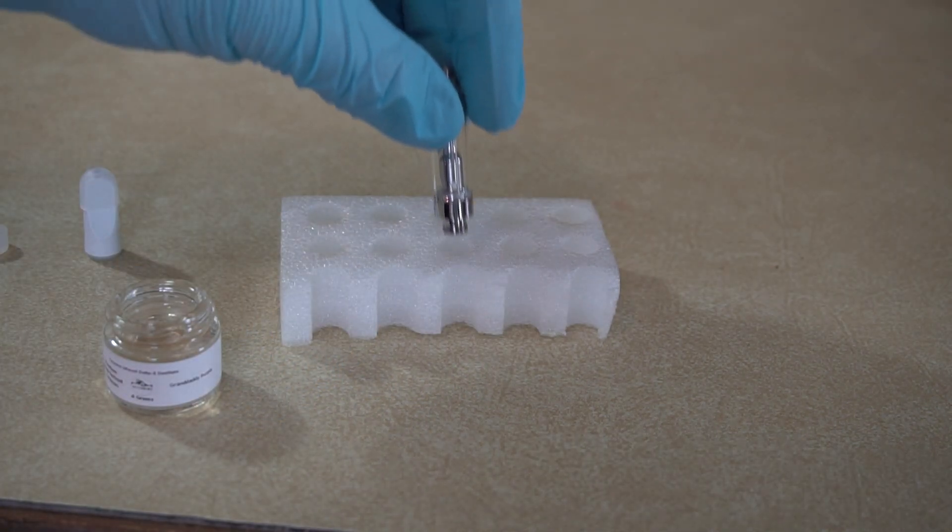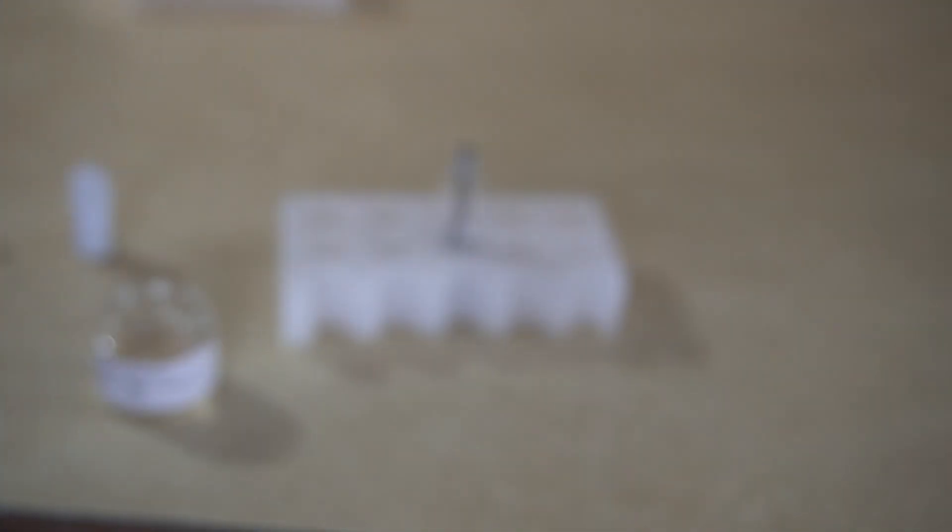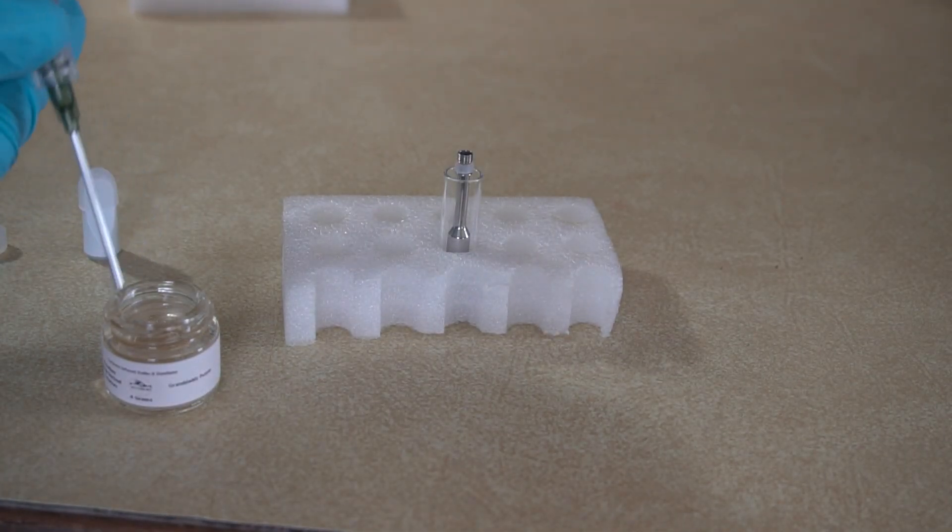Then we're going to take our cartridge out of the oven, put it into where we need to be to fill it, and then our syringe, and then we're just going to immediately plunge our distillate.